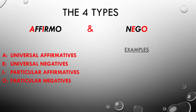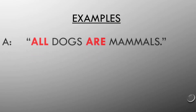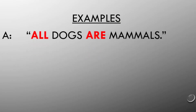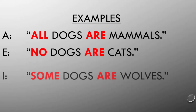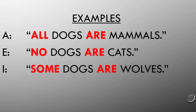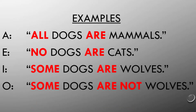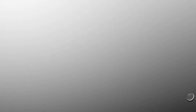Here are examples of each type written in standard form. A: all dogs are mammals. E: no dogs are cats. I: some dogs are wolves. And O: some dogs are not wolves.